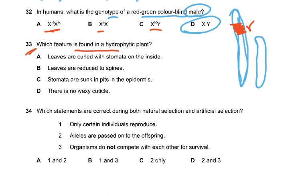Question 33: Which feature is found in a hydrophytic plant — a plant that lives in water? Since there is no scarcity of water, there is no need for a waxy cuticle to prevent cuticular transpiration. So the answer is D: there is no waxy cuticle.